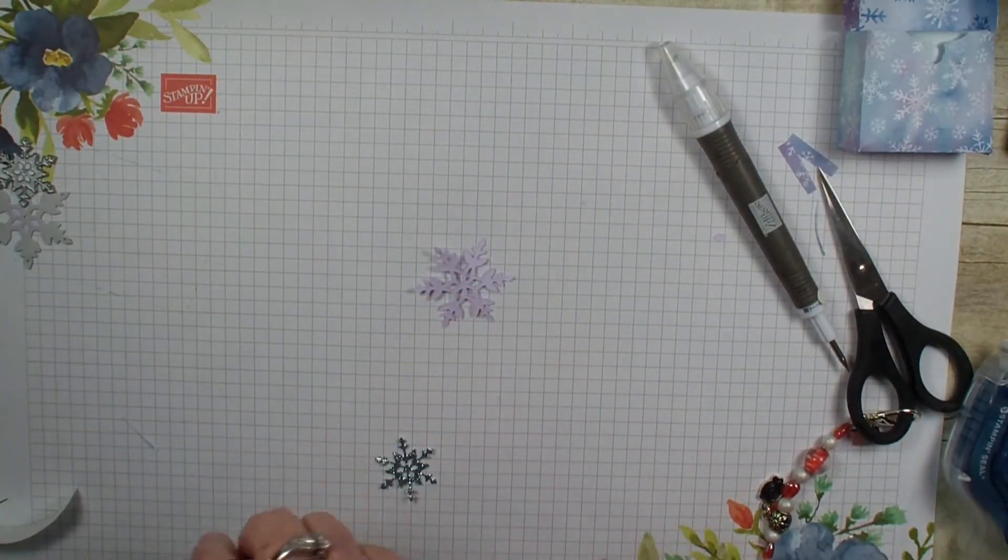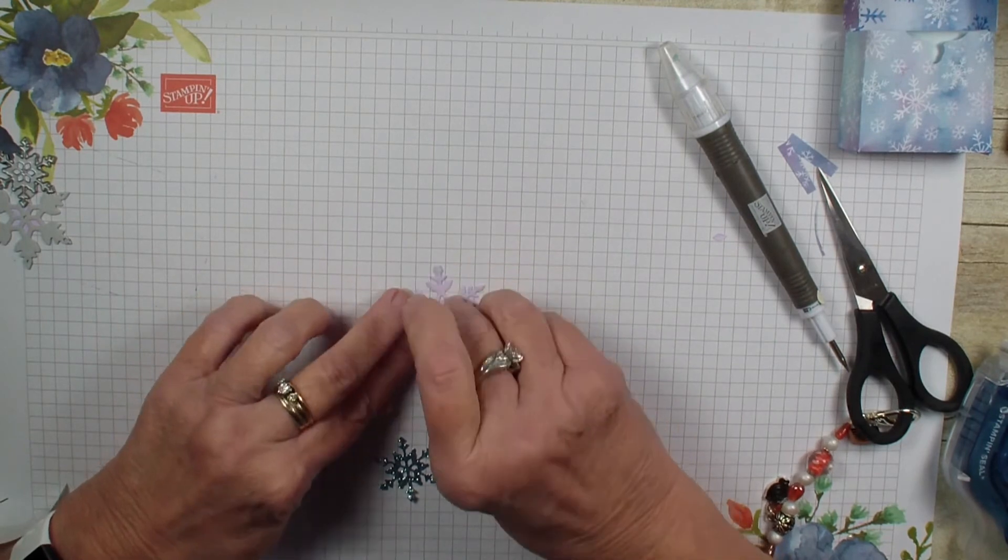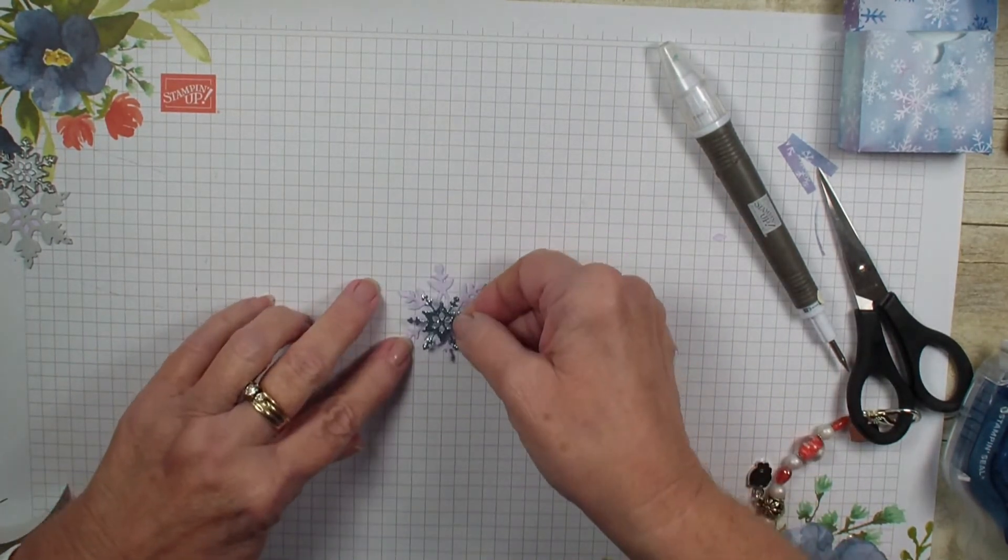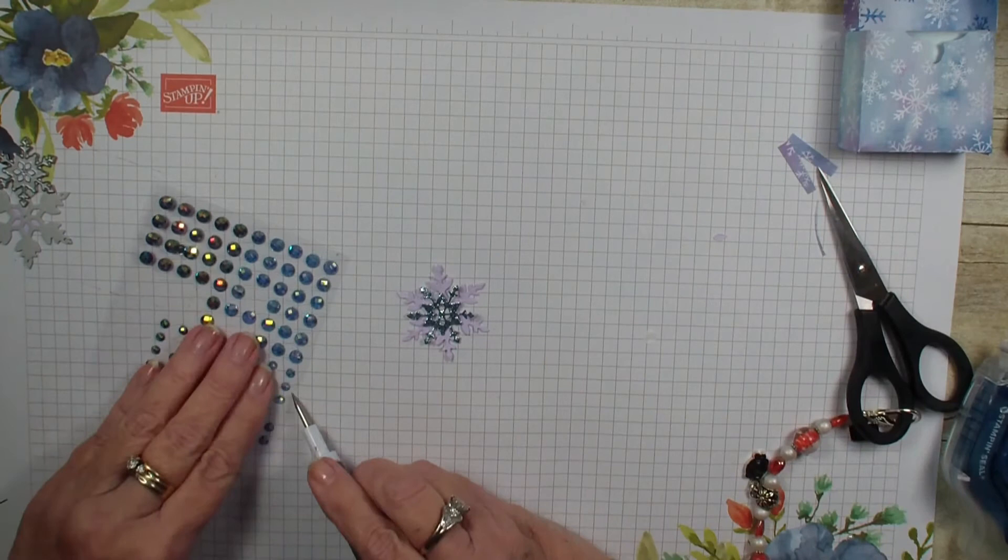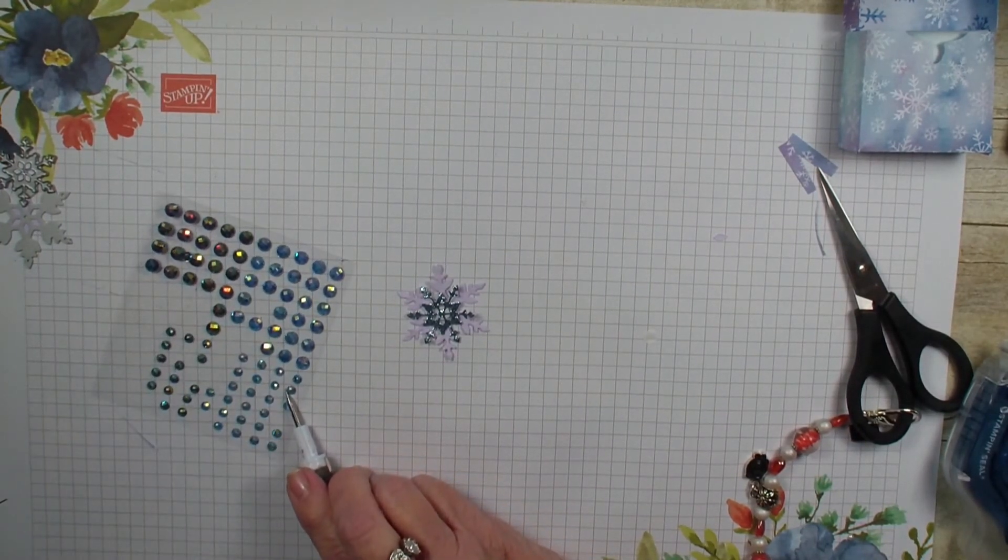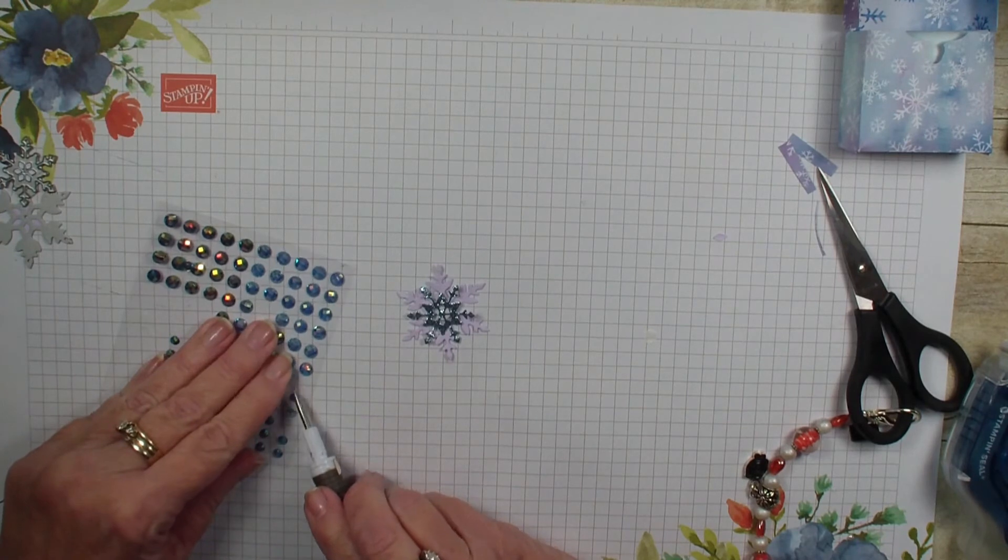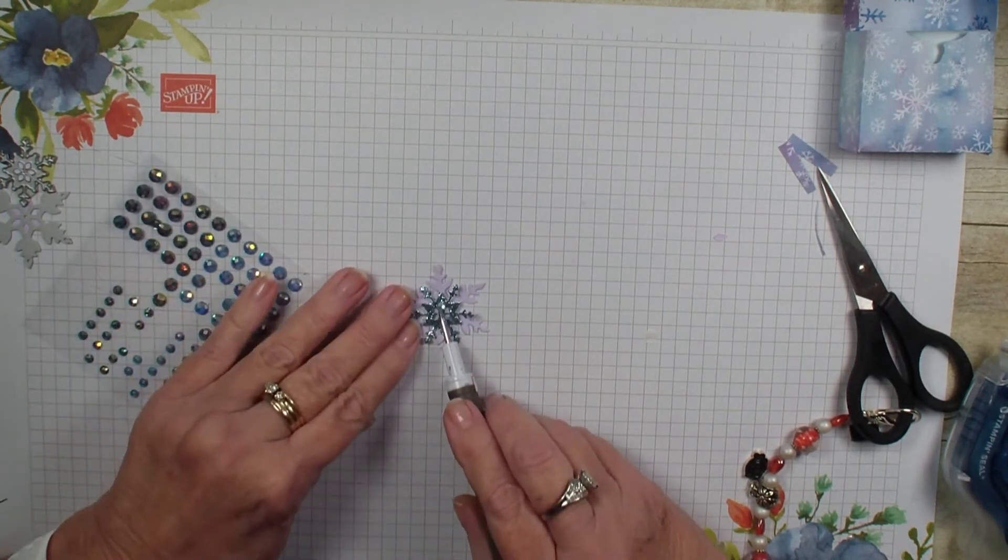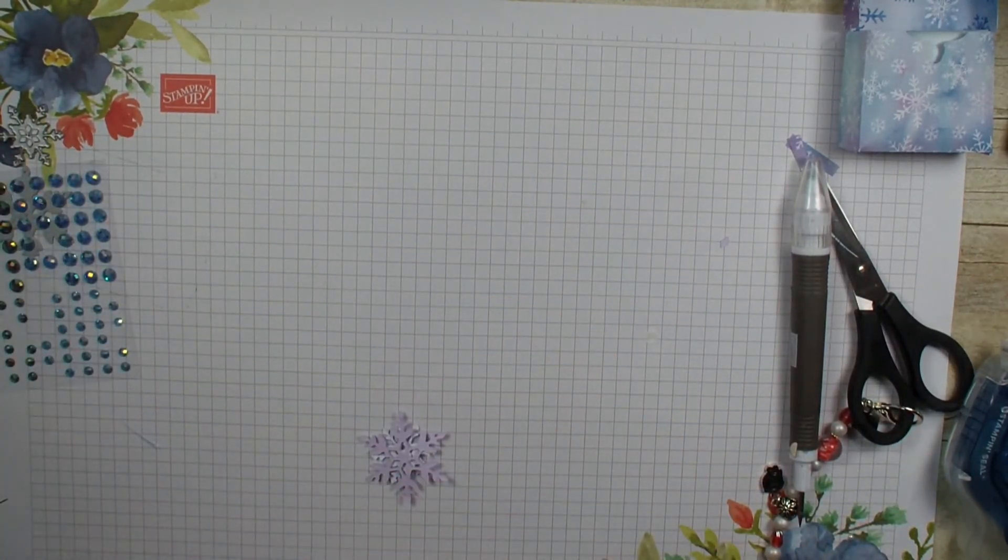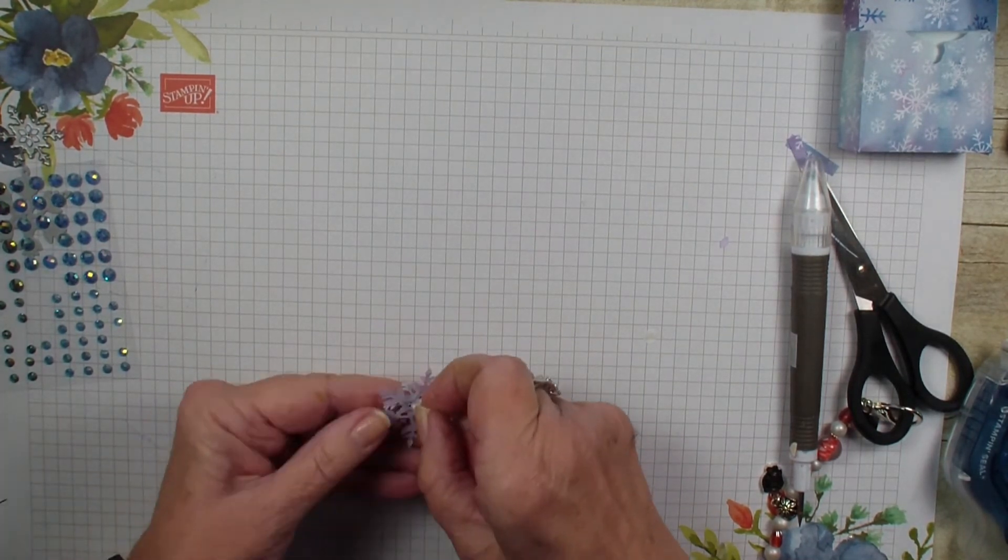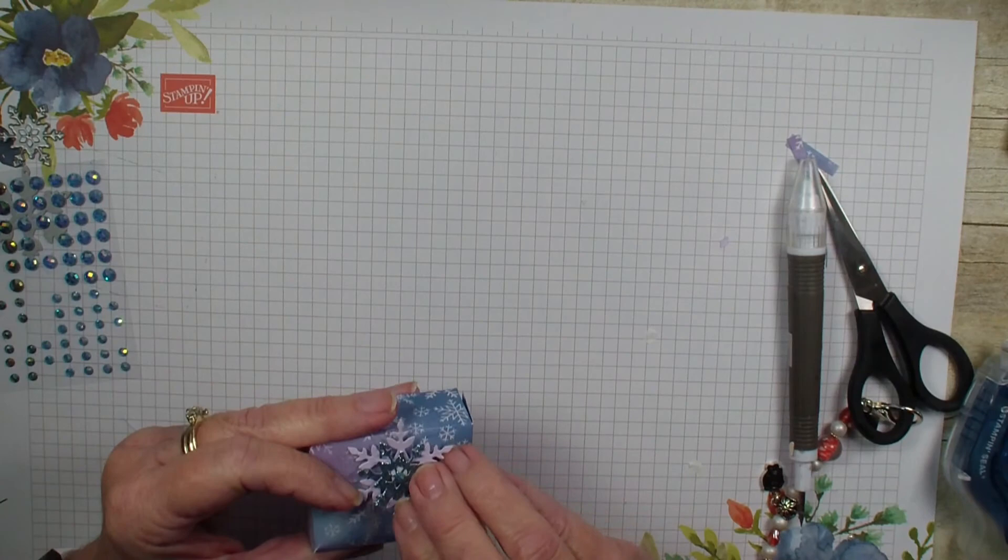Next what I am going to do is take a small dimensional and pop it in the middle of the Purple Posey and then put my Balmy Blue on top of that. In order to cover up that dimensional we are going to grab our Blue Adhesive Back Gems. I am going to go ahead and grab another little dimensional, put it on the back and then grab that box and put it on the front of the box like so.